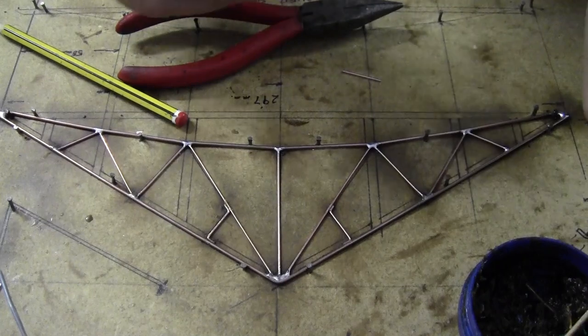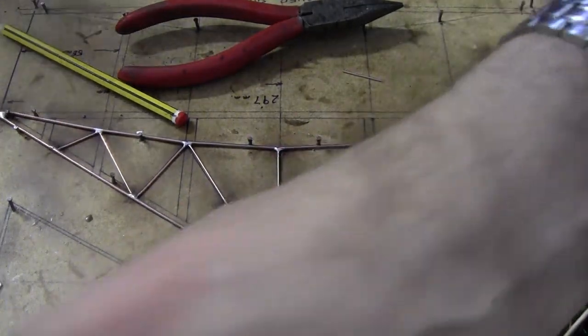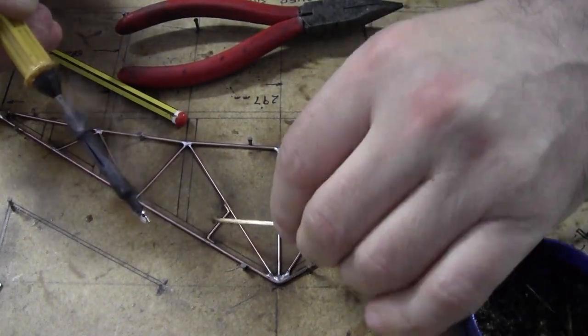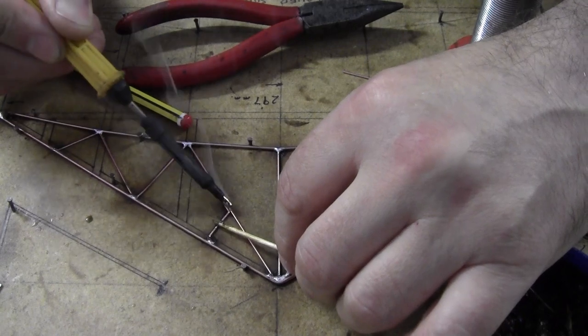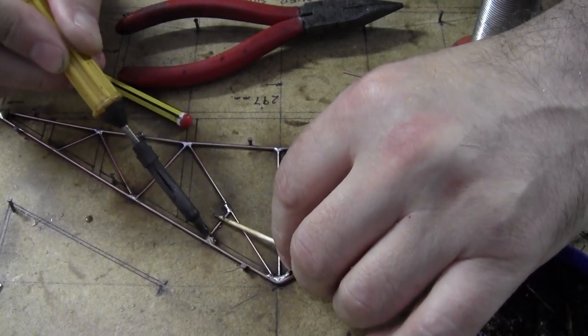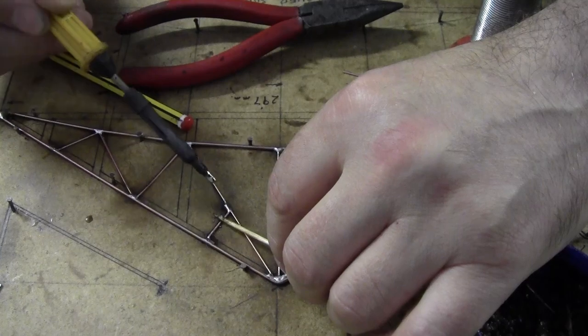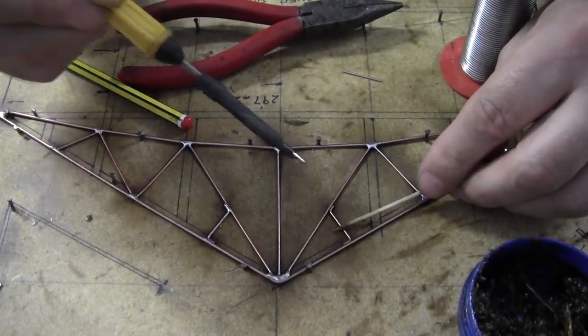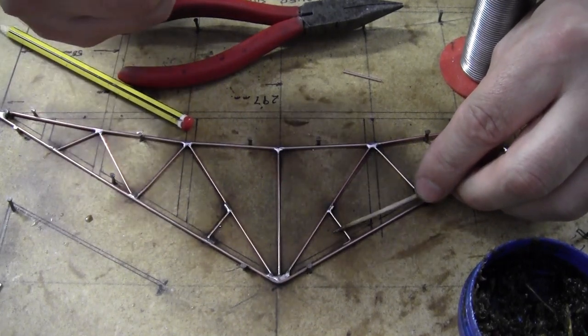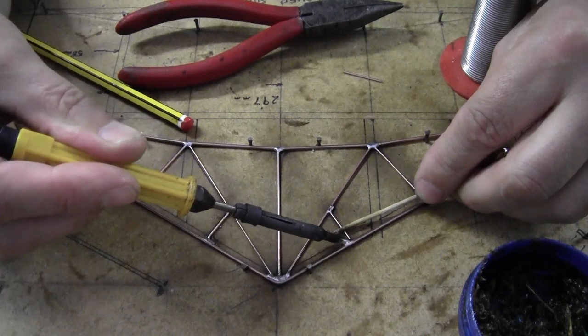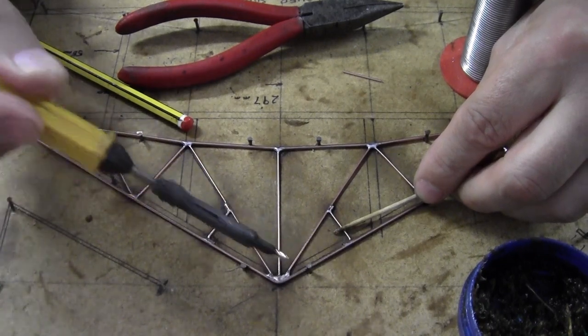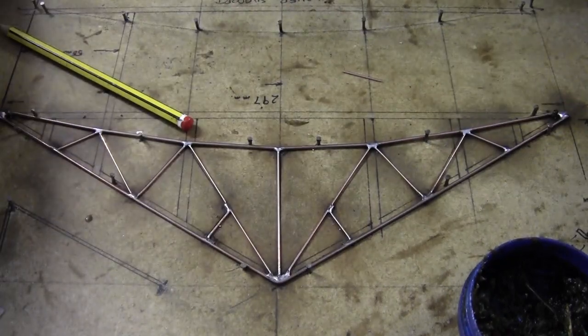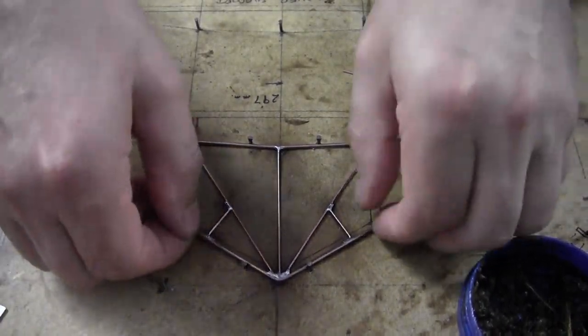So, here we are, the last few bits to solder. And all we have to do with these is just clean them up and try and get as much of this flux off, because otherwise the paint won't take. All right, I think that's ready to come out of the jig.